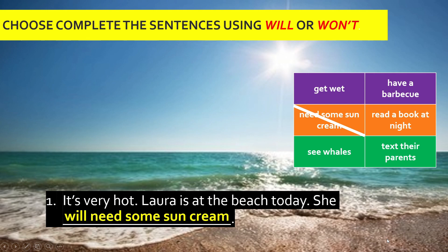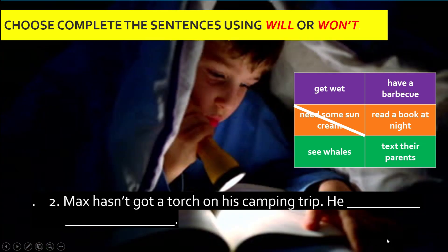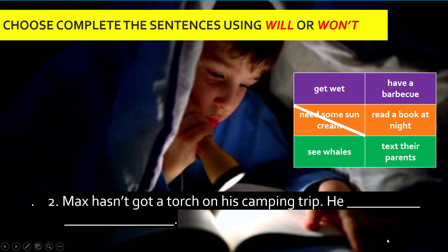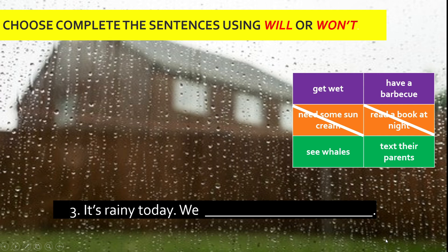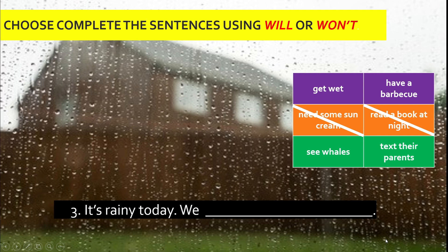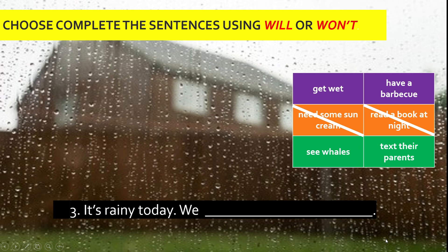Remember to add 'will' or 'won't'. In this sentence it is 'will'. Number two: 'Max hasn't got a torch on his camping trip.' Max doesn't have a torch yet, so which answer is most appropriate? We should choose 'won't' rather than 'will'. He won't read a book at night, so we cancel out 'read a book at night'. Number three: 'It's rainy today. We...' Since it's rainy outside, what outdoor activity can you not do? It's a barbecue — therefore we need to choose 'won't' instead of 'will'.